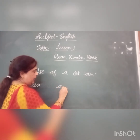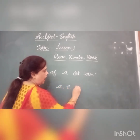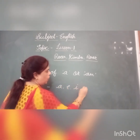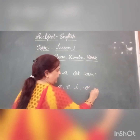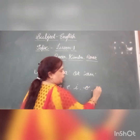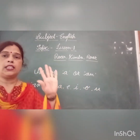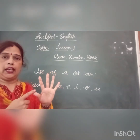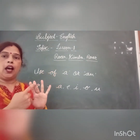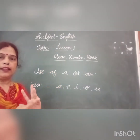Five vowels: A, E, I, O, and U. How many vowels? Five vowels — A, E, I, O, U.